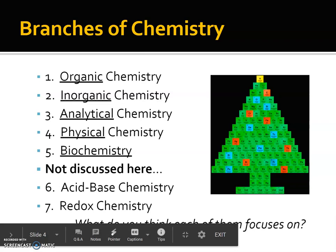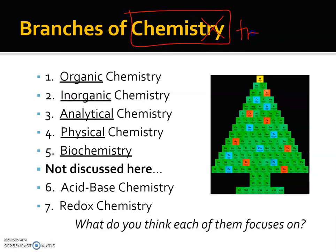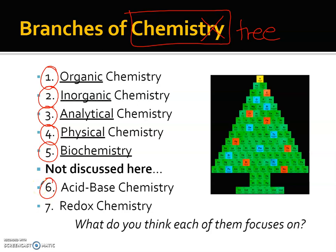If you think of chemistry as a tree, all trees have branches. There are five major components to this chemistry course: organic chemistry, inorganic, analytical, physical, and biochemistry. Those are the main parts we can break things up into. Just like branches of a tree, there are twigs and offshoots that come from it — sometimes they overlap. You can also get further into acid-base chemistry or redox, which is reduction-oxidation chemistry, which we'll get into if we have time at the end of the year.